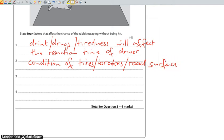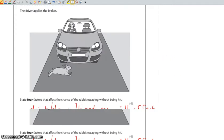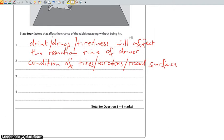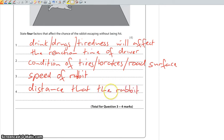And then any sensible suggestion as to why the rabbit is not going to get hit by the car. So the speed of the rabbit, the distance the rabbit is away from the car, etc.